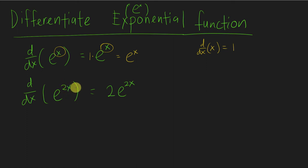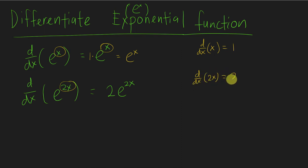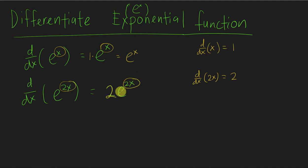If I differentiate e^(2x), you have to imagine what you get if you differentiate 2x — you basically get 2. So you just move the 2 to the front, and then the power will always stay the same. So it's still 2e^(2x).